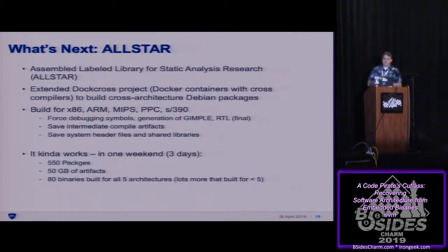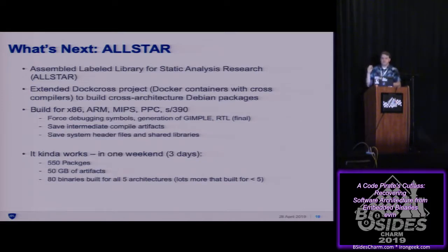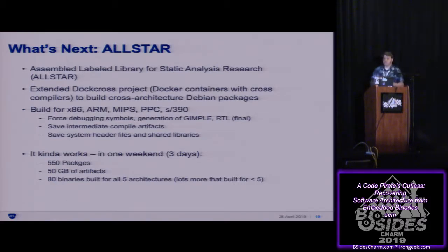We have a working prototype. It extends the .cross project — a set of Docker containers with cross compilers — and we extended it to build Debian packages. In about three days running on a single core, I was able to build 550 packages over one weekend, getting about 80 binaries that built for all five architectures. If that ratio holds up, we could expect about 4,000 binaries, which would be pretty decent. Hopefully fixing some bugs could get us 8 to 10,000 out of the 30,000 packages.